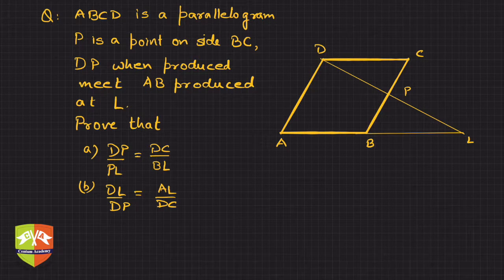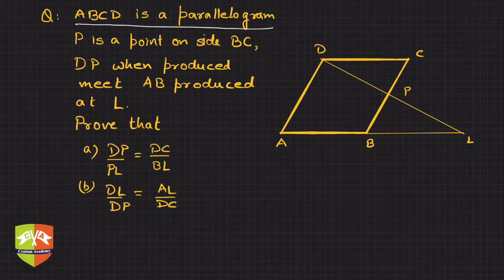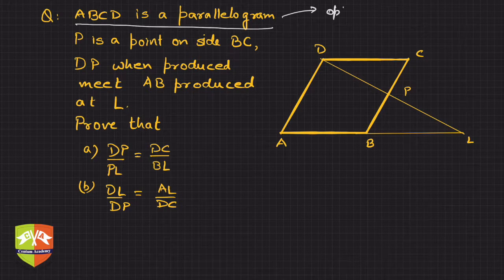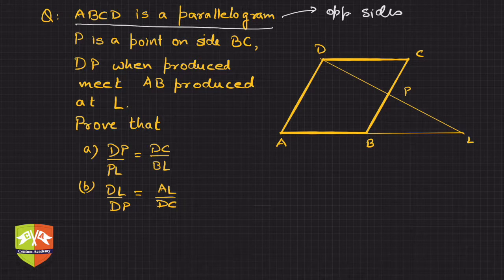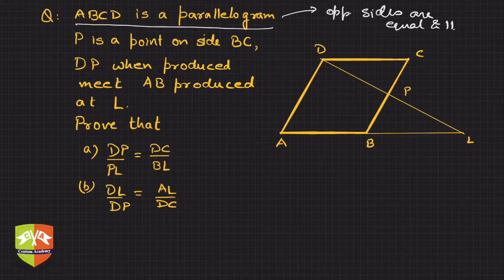Let us read the question carefully. ABCD is a parallelogram. The moment the word parallelogram comes, you know opposite sides are equal and parallel. This is what we have known about the properties of a parallelogram. P is a point on side BC.